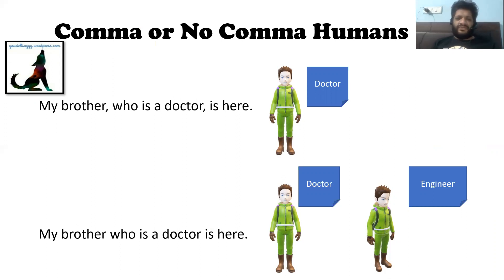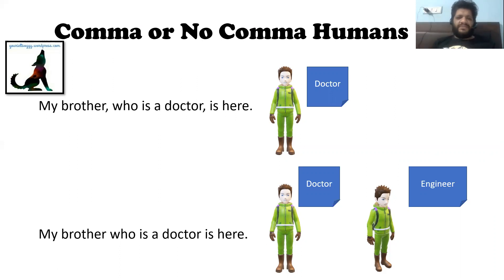The same comma rule applies with 'who' for humans. If something is worth mentioning and essential, you should not put commas — as with 'that.' If something is additional and not strictly required, it should be accompanied by commas before and after. For example, if I have only one brother who is a doctor, I say 'My brother, who is a doctor, is here.' But if I have two brothers — one a doctor, one an engineer — I say 'My brother who is a doctor is here,' with no commas, to specify which brother I mean.